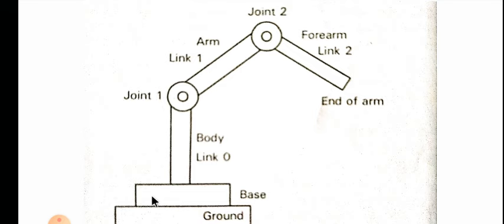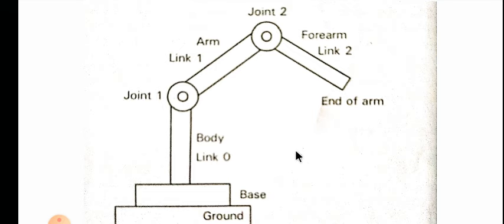Now we will see the anatomy. What you are seeing on the screen is a robot anatomy diagram. Robot anatomy deals with the study of different joints, links, and other aspects of a manipulator. A manipulator is an arm-like mechanism similar to the human arm, designed to move materials, parts, or tools without direct human contact.